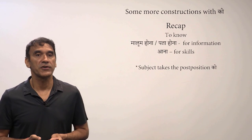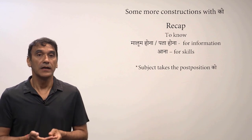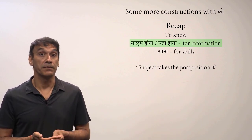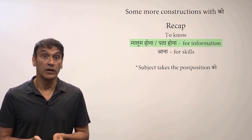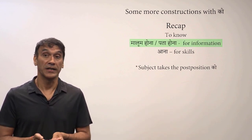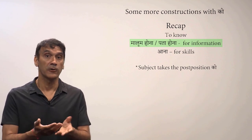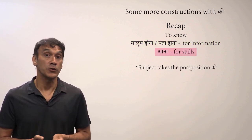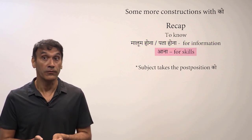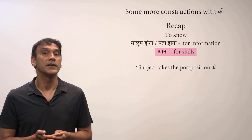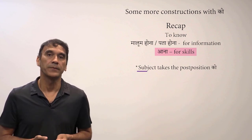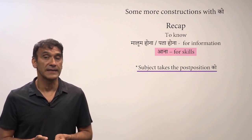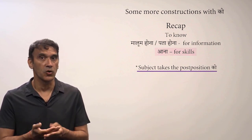To recap: whenever you want to use the verb 'to know' for information, use the phrase 'malum hona' or 'pata hona.' When you want to use 'to know' for a skill, use the verb 'aana.' Also remember that the subject takes the postposition 'ko.'